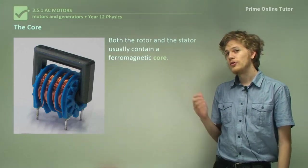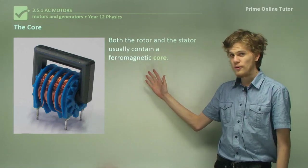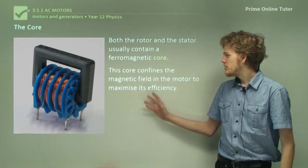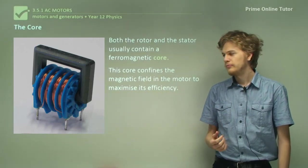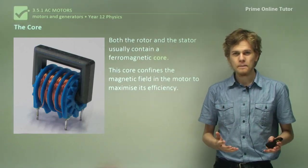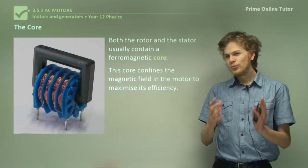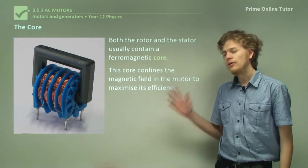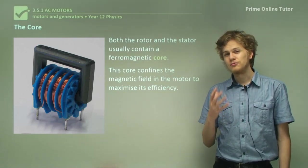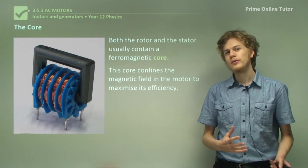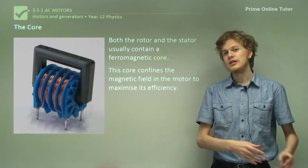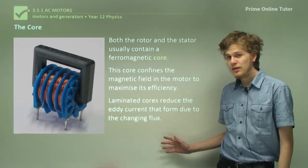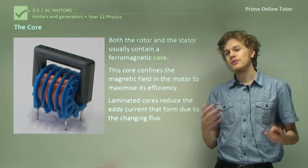Both the rotor and the stator are usually connected to a ferromagnetic core, so something made of ferrite or iron. The purpose of the core is to confine the magnetic field inside the rotor, which will maximize the motor's efficiency. Magnetic fields really like iron and other ferromagnetic materials, so by having an iron or ferrite core we greatly increase the amount of magnetic flux passing through the motor, and therefore the amount of energy converted from electric energy into kinetic energy. Remember that we often laminate the iron core because this reduces the amount of eddy currents that can appear in the core.